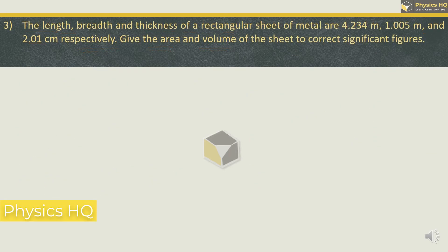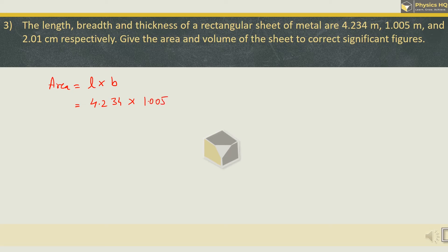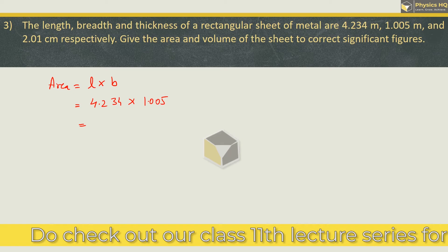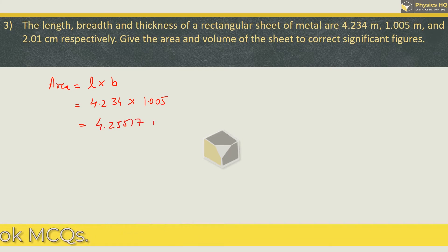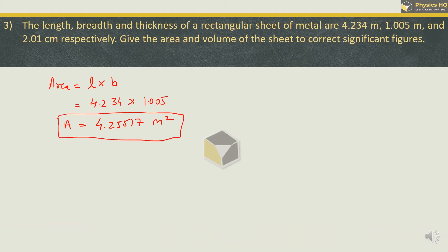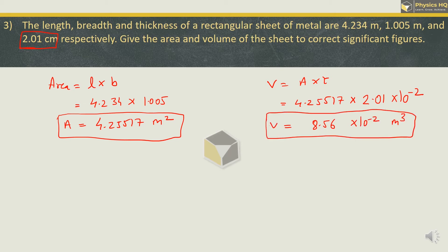Let us go to the next sum. The length, breadth, and thickness of a rectangular sheet are given. Find the area and volume to the correct significant figures. Area = length × breadth = 4.234 m × 1.005 m = 4.25517 m². For volume, we multiply area by thickness. Thickness is 2.01 cm = 2.01 × 10⁻² m. Multiplying gives the volume as 8.56 × 10⁻² m³.